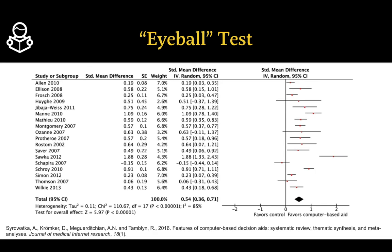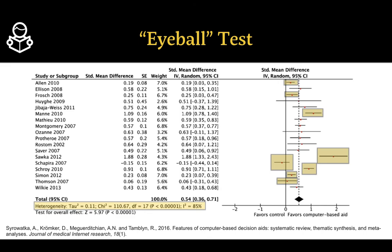Now looking at a different example from a real study, you can see several studies in the systematic review. Using the same eyeball test, if you draw a dotted line from the center of the pooled effect, several studies don't touch that line — indicating heterogeneity in the outcomes and effect sizes. In this example, heterogeneity is 85%, representing high heterogeneity. So there are two primary ways to assess it: statistically via I-squared, and visually via the eyeball test.